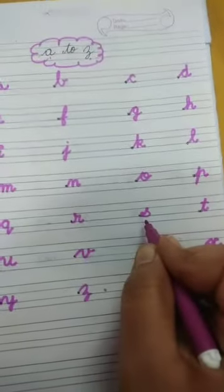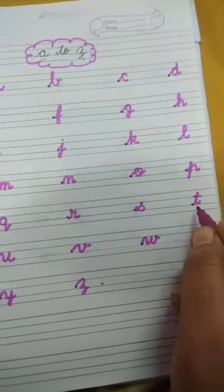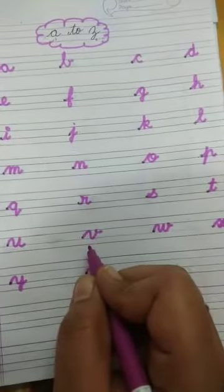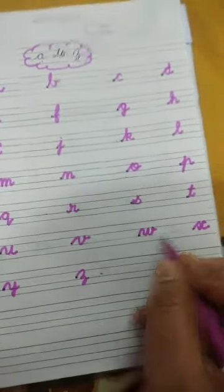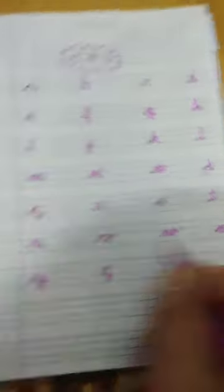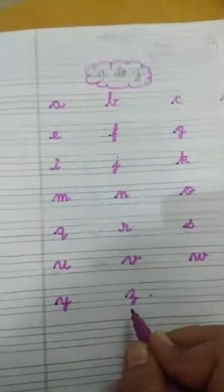Q, Q, Queen. R, R, Rabbit. S, S, Sun. T, T, Tomato. U, U, Umbrella. V, V, Van. W, W, Watch. X, X, X-Mastery. Y, Y, Yarch. Z, Z, Zebra.